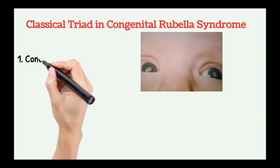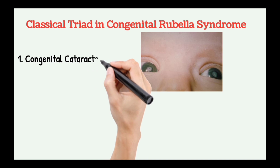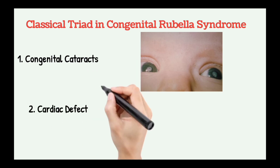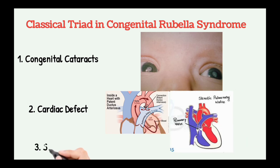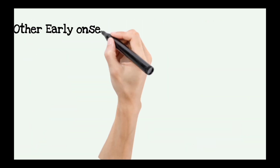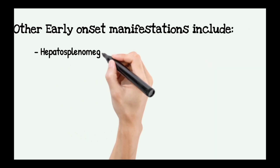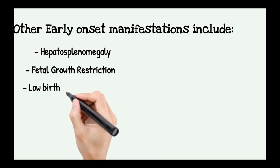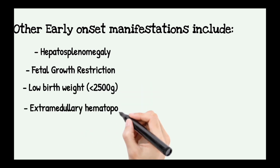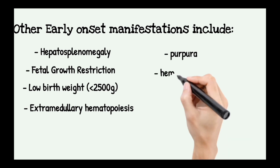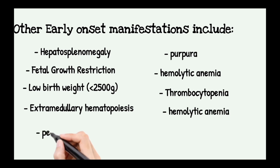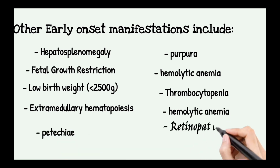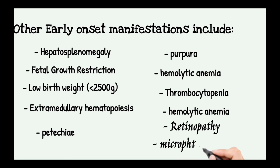The classic triad includes: congenital cataracts, cardiac defects — most commonly patent ductus arteriosus and pulmonary stenosis — and sensorineural deafness. Other manifestations include hepatosplenomegaly, fetal growth restriction, low birth weight, extramedullary hematopoiesis, hemolytic anemia, thrombocytopenia, and microcephaly.